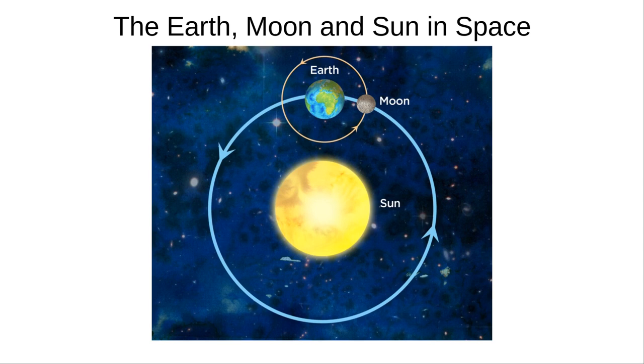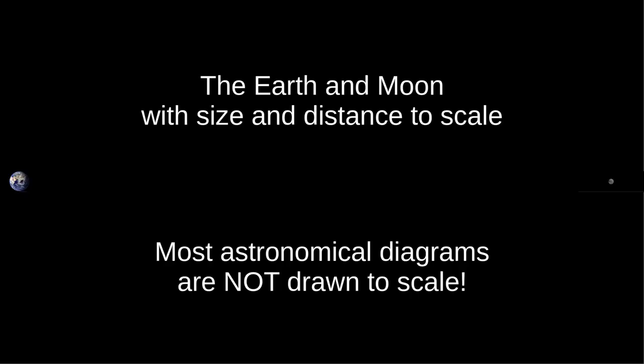These are things that we know very accurately these days. This is the Earth and the Moon to scale. If we included the Sun to scale and at the correct distance, the Earth and Moon would be less than a pixel wide. This is why most astronomical diagrams are not drawn to scale.